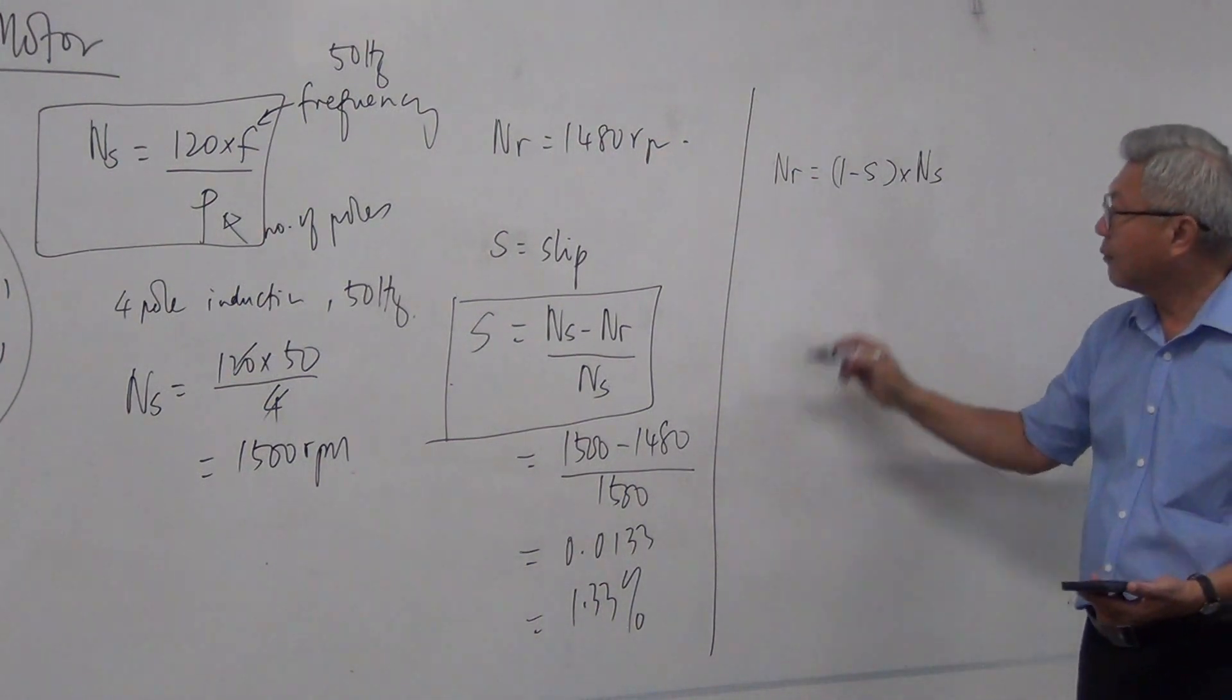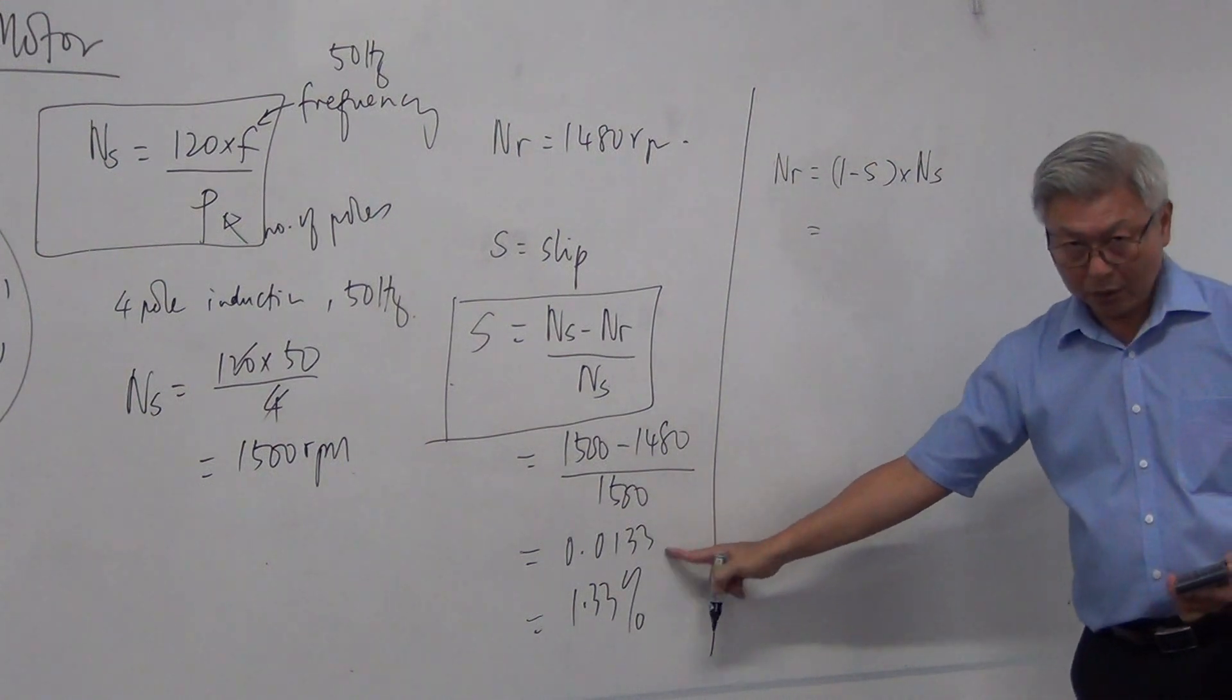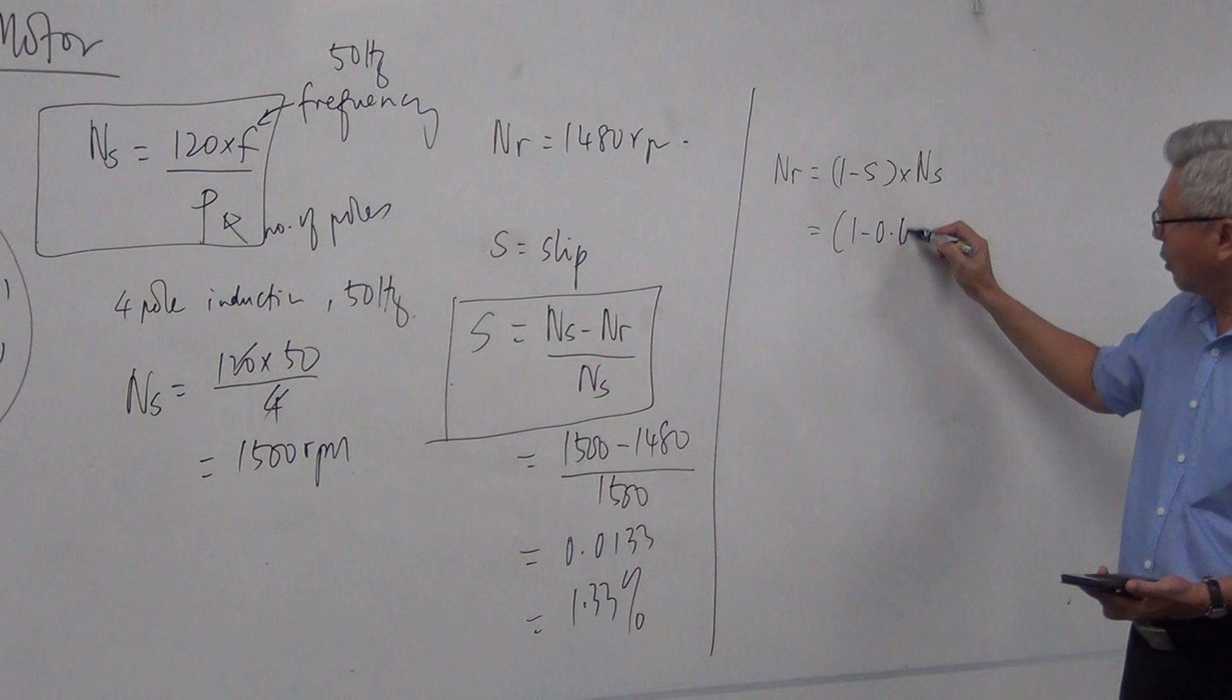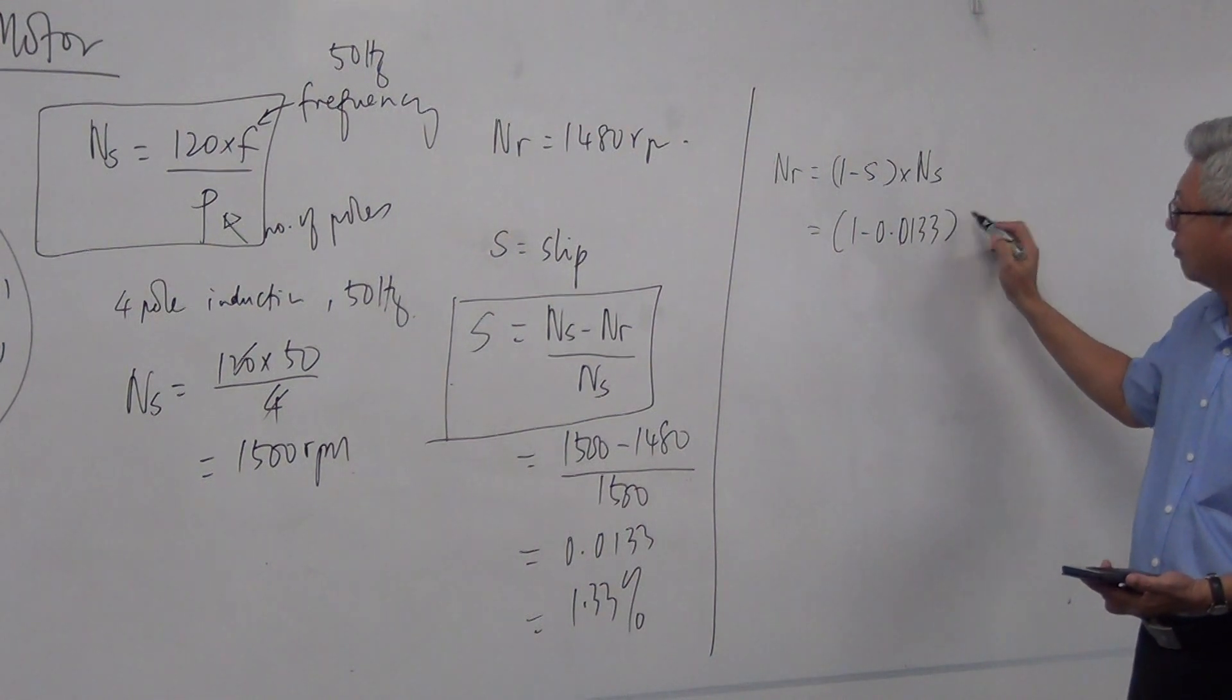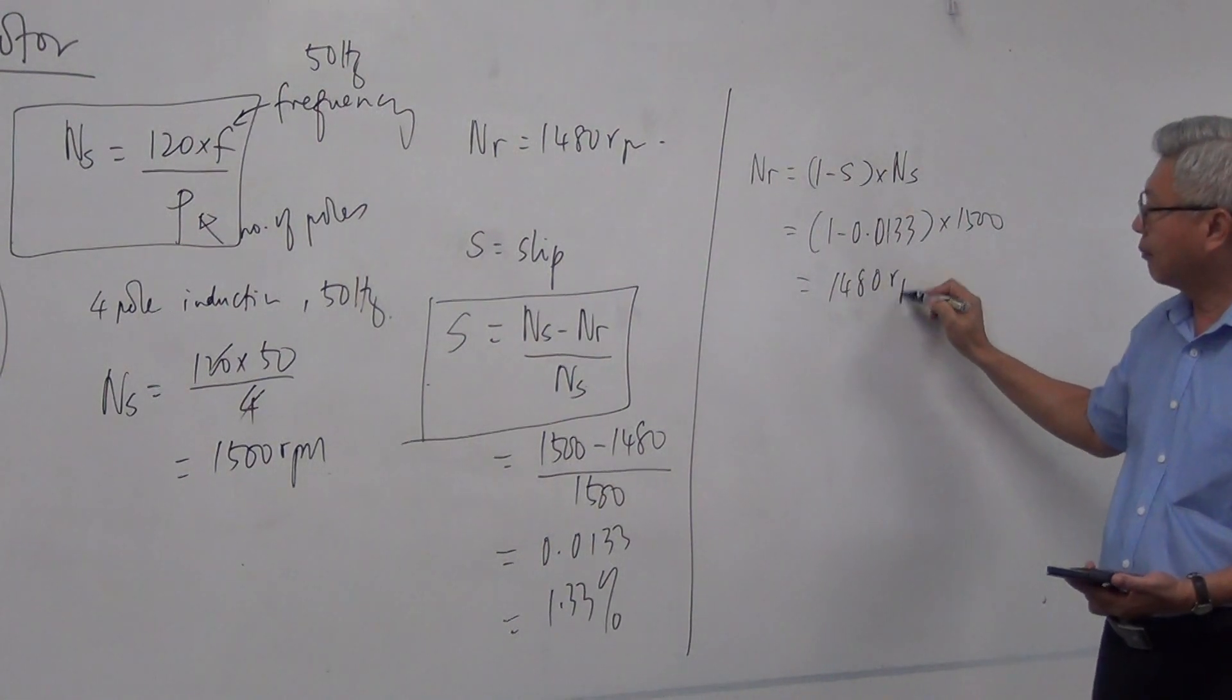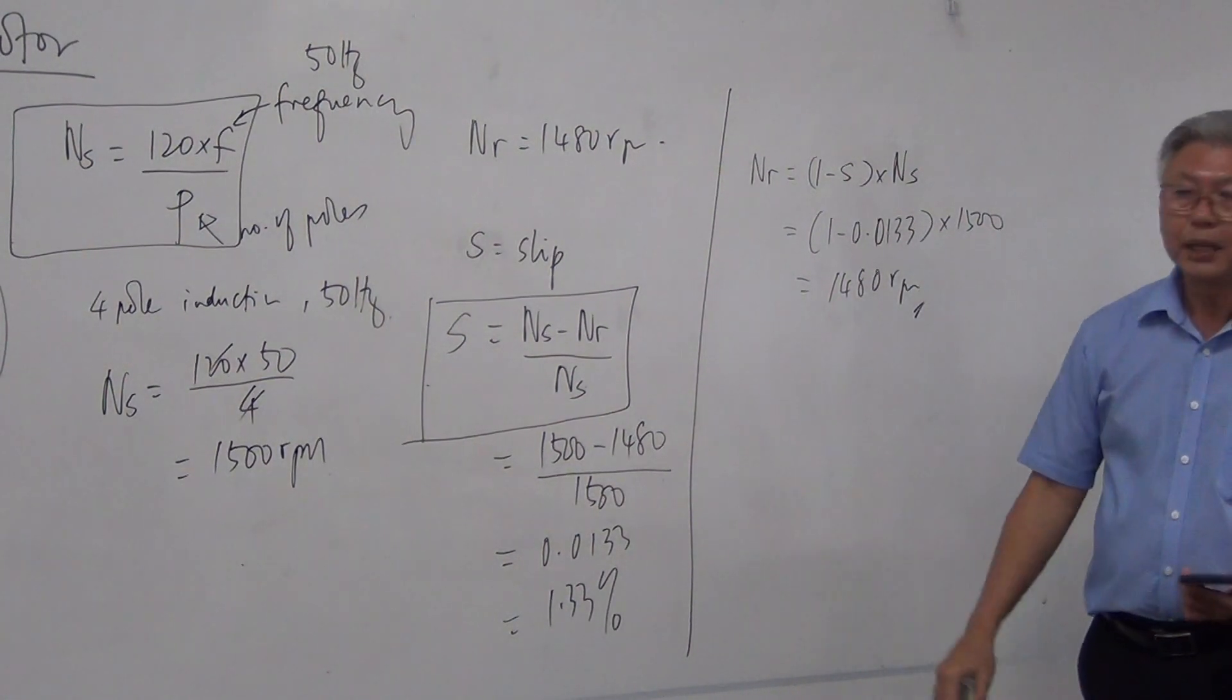So in this example here, the slip is 0.0133. So it's 1 minus 0.0133 multiply 1500. And we should get back our 1480 RPM.